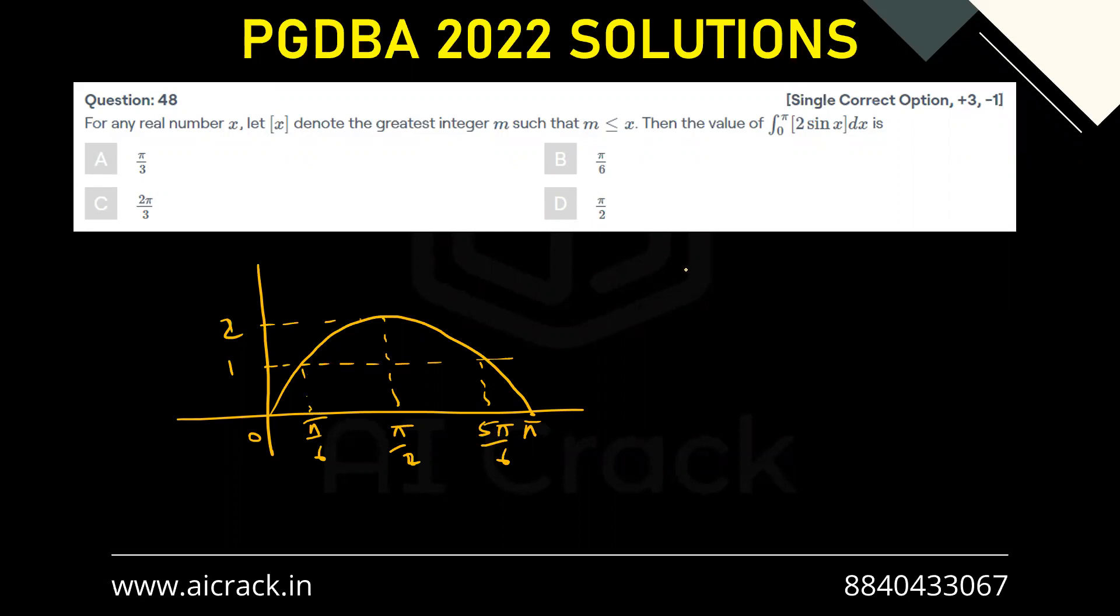With the help of the property that if in the range which we are calculating the integral, if the function is being discontinuous at some points or the definition of function is changing, then we have to break the integral at certain points. So that point would be this point and this point, because at these two points the function is becoming discontinuous.